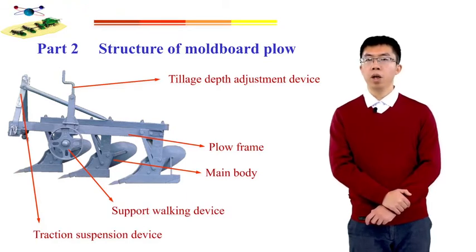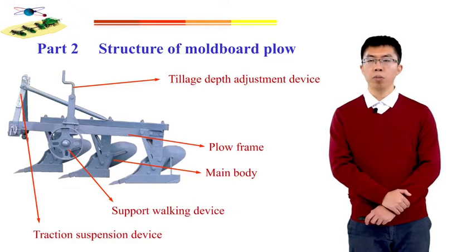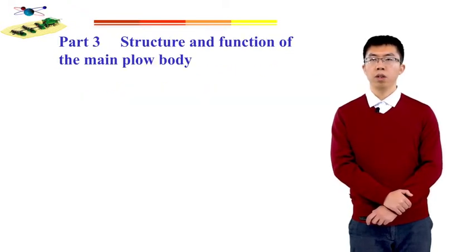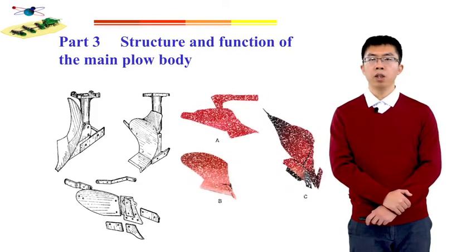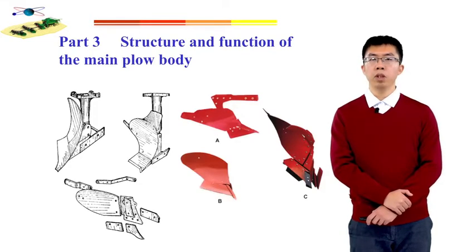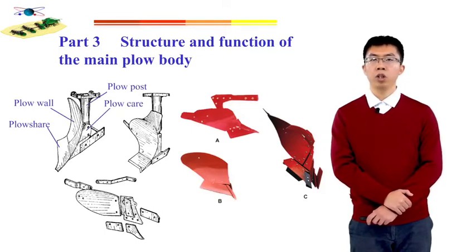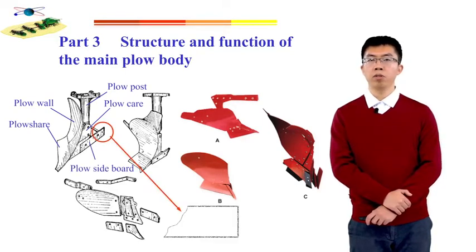The main plow body is the core working part of the multiple plows. The main plow body includes plow post, plow tail, plow wall, plow shell, plow sideboard, plow heel, and plow surface.